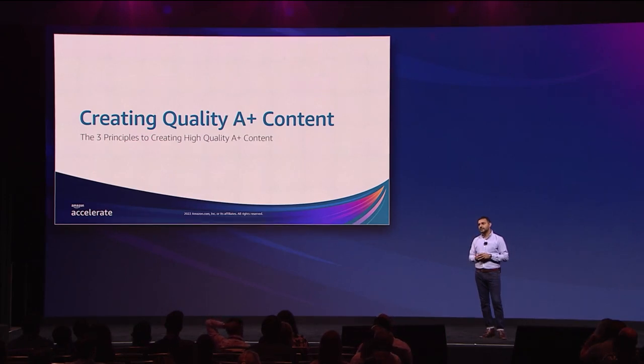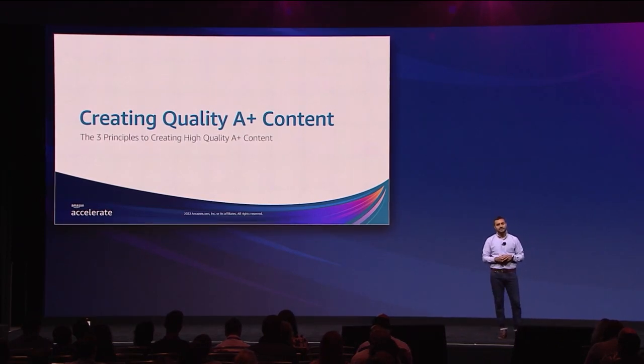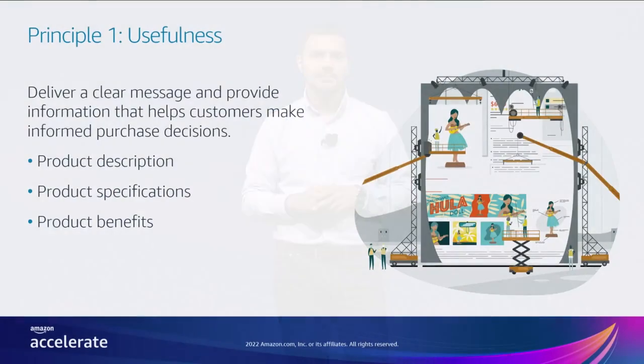So far we've talked about two types of A-plus content: premium A-plus, a new dimension for sharing product information with shoppers, and brand story, the dedicated feature for sharing your story as a brand. But what goes into creating high-quality A-plus content? There are three principles: usefulness, trustworthiness, and aesthetics. Useful A-plus content enables brands to deliver a clear message and provides relevant information to help inform a purchase decision. Product details including product descriptions, specifications, and benefits are important to include in your A-plus content because they show your product's value to customers.